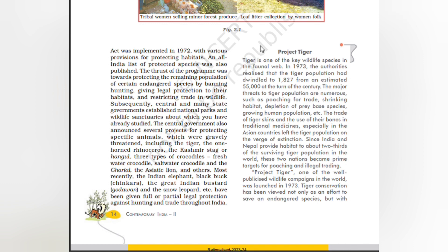Project Tiger: Tiger is one of the key wildlife species in the faunal web. In 1973, the authorities realized that the tiger population had dwindled to 1,827 from an estimated 55,000 at the turn of the century. The major threats to tiger population are numerous, such as poaching for trade, shrinking habitat, depletion of prey base species, and growing human population. The demand for tiger skins and the use of their bones in traditional medicines, especially in Asian countries, left the tiger population on the verge of extinction.